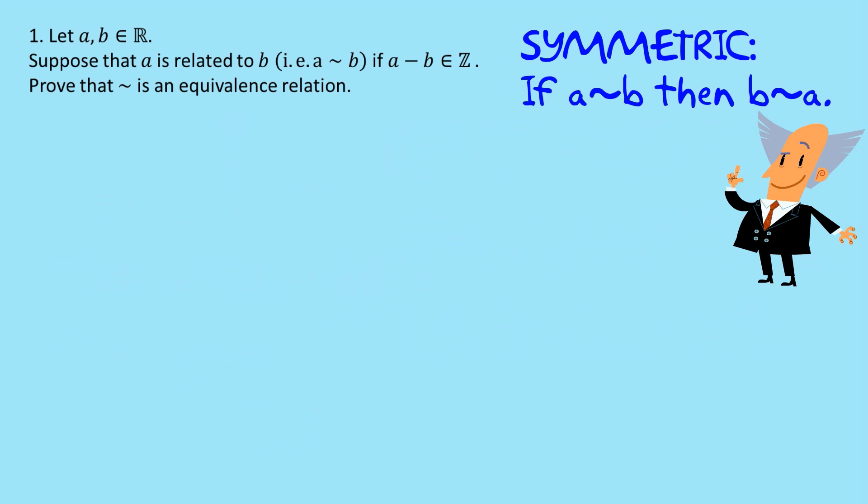The next thing that we need to show is that if a is related to b, then b is related to a. And we say then that the relation is symmetric. So let's go and prove that.